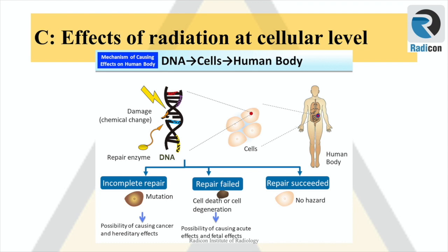However, when a large number of cells die or degenerate, there is a possibility that deterministic effects will appear, such as hair loss, cataract, skin injury, other acute disorders, or fetal disorders, as seen in the middle part of the picture when repair fails. In a third scenario, when the cell in which genes were not completely repaired survives, cell genes may mutate and cause stochastic effects such as cancer or hereditary disorders, as seen on the left side of the picture.